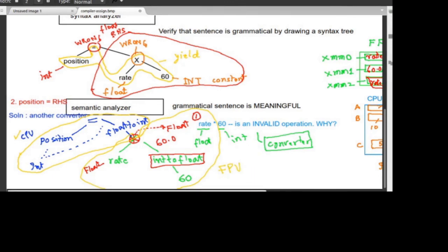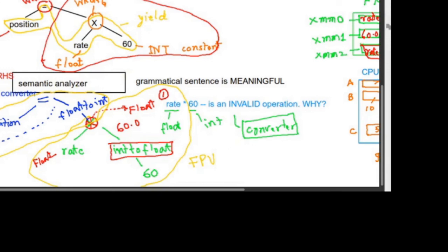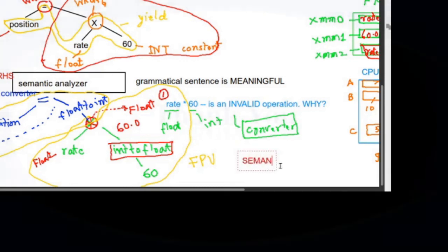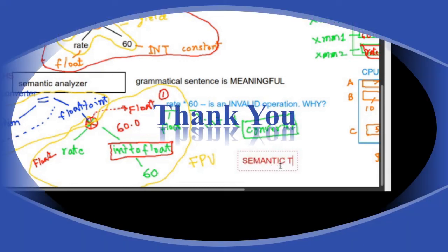This is the purpose of semantic analysis. The output tree we have produced — which includes the two type converters — is called the semantic tree.